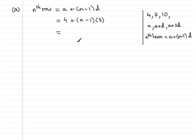So let's just expand this bracket here and we get 4 plus 3n minus 3. And grouping this together, 4 take away the 3 is 1, so we have 1 plus 3n. OK, so that's part A.